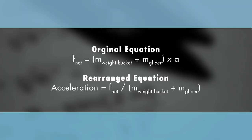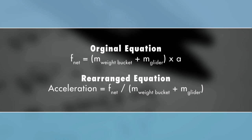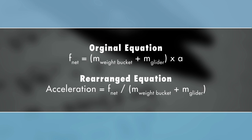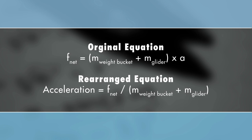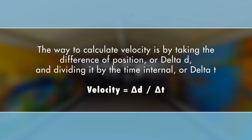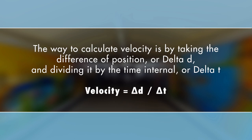The net force equals mass of the bucket times 9.8 meters per second squared. We can calculate the expected acceleration by rearranging the equation: F-net equals mass of the weight bucket plus mass of the glider times acceleration, so acceleration equals F-net divided by the mass of the weight bucket plus mass of the glider. When solving for acceleration, we include all of the masses in the system, not just the mass of the glider.